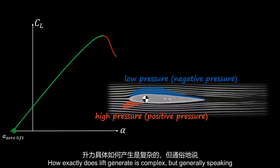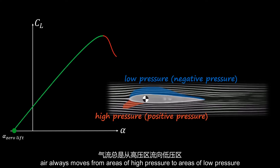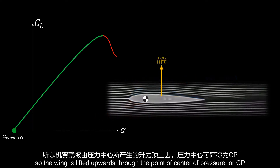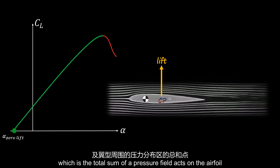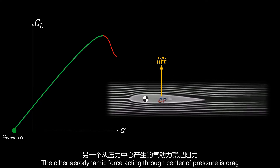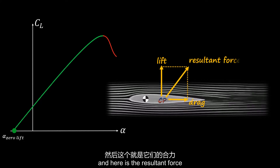How exactly lift is generated is complex, but generally speaking, air always moves from areas of high pressure to areas of low pressure. So the wing is lifted upwards through the center of pressure, or CP, which is the total sum of the pressure field acting on the airfoil. The other aerodynamic force acting through the center of pressure is drag, and here is the resultant force.